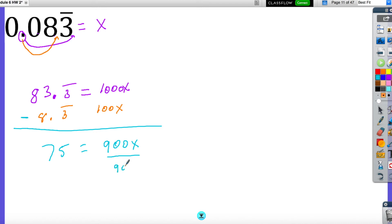And then all I'm going to do is divide both sides by 900 to get x all by itself. So I'm going to have x is equal to 75 over 900.